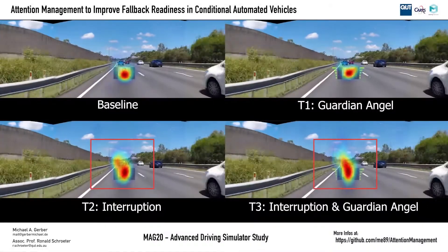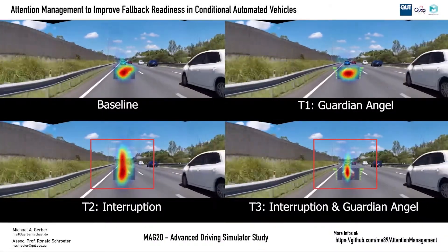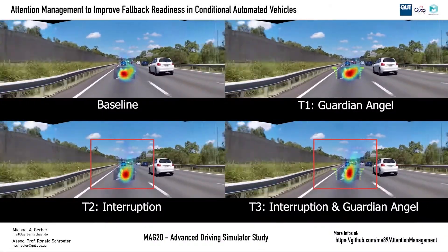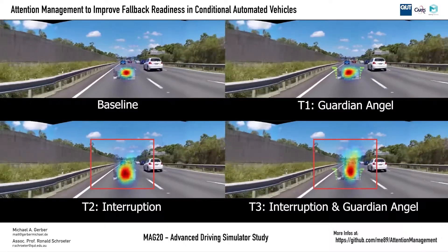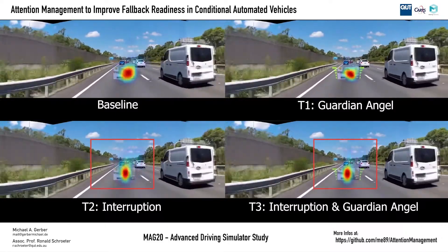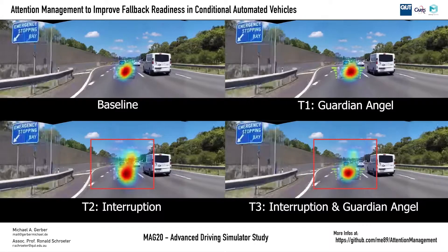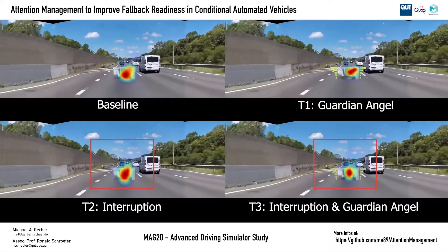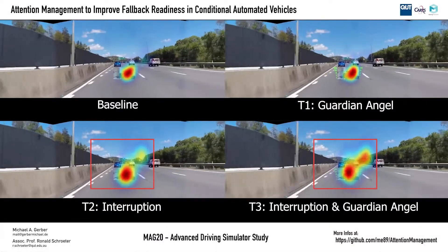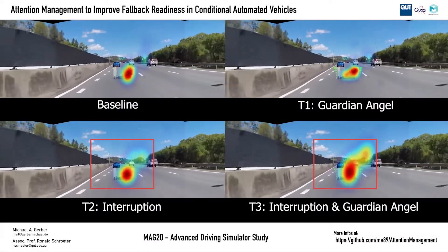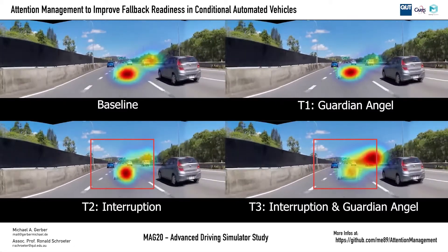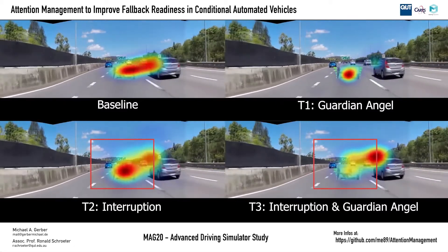First, we noticed that participants in both interruption groups interrupted the entertaining task more frequently and regularly to check on the road ahead, even though the display was not taken away. Secondly, participants in both interruption groups appear to interact and react better and faster to events, such as other road users.